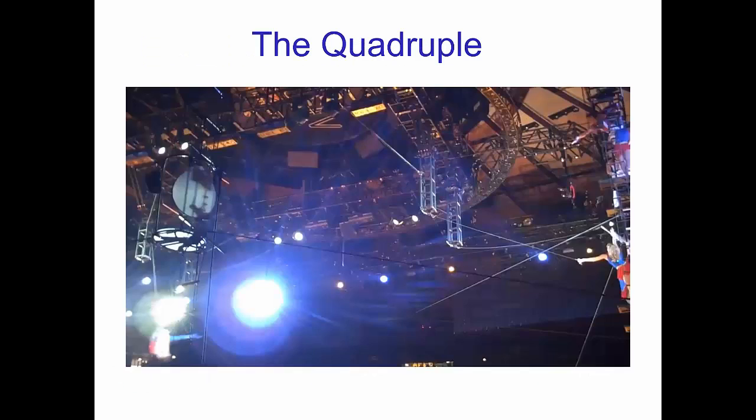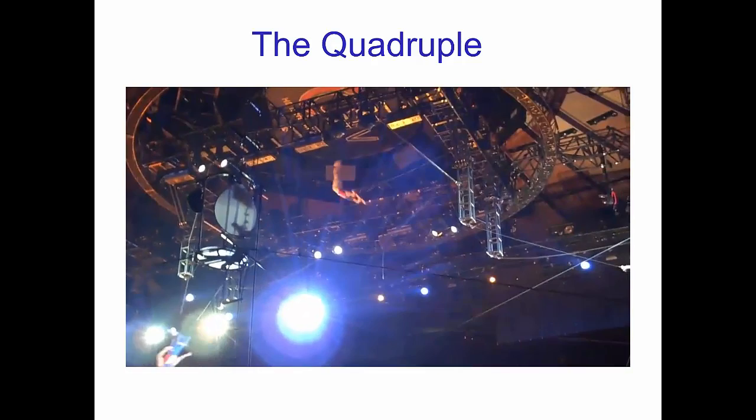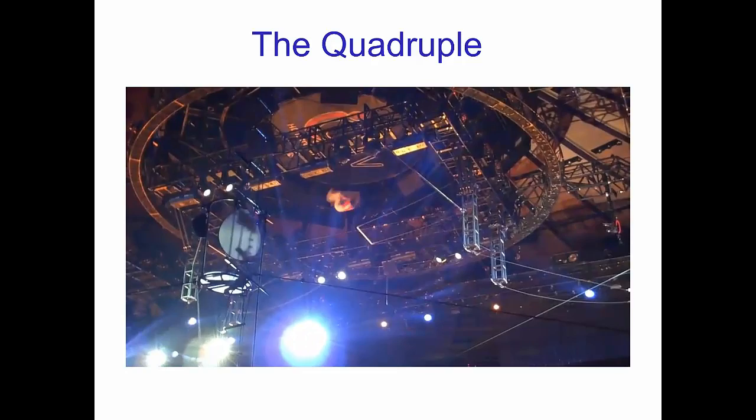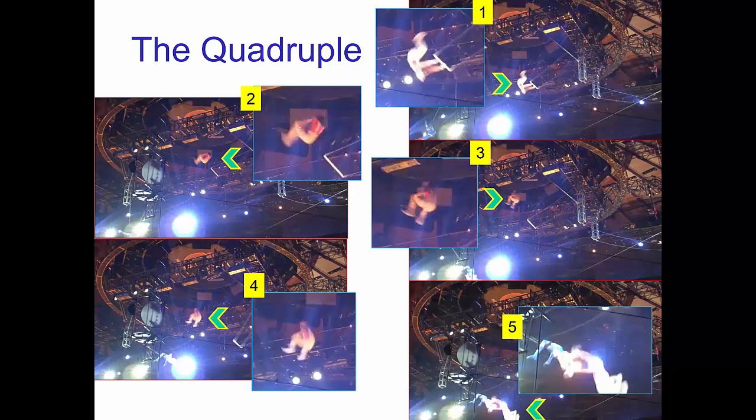Here's a dramatic example of a trapeze performer executing a quadruple somersault. This is a difficult trick to perform because the artist is in the air for only a few seconds. To complete all four somersaults, he has to rotate his body as rapidly as possible.